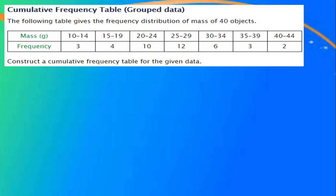It is divided into class intervals as 10 to 14, meaning 10 gram to 14 gram; 15 gram to 19 gram; 20 gram to 24 gram; 25 gram to 29 gram; 30 gram to 34 gram; 35 gram to 39 gram; and 40 gram to 44 gram. The frequency corresponding to the first interval is 3, meaning there are 3 objects having weight between 10 gram and 14 gram. The second frequency, 4, means there are 4 objects having weight between 15 gram and 19 gram.